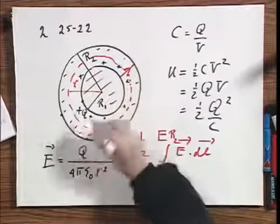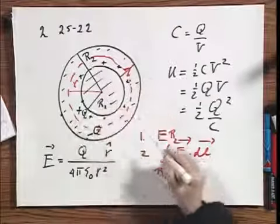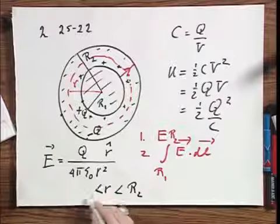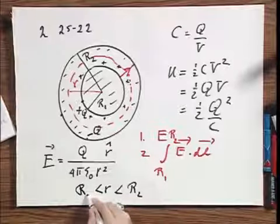vectorially E equals capital Q divided by 4π epsilon 0 R squared times R roof, pointing radially outward because the inner sphere is positive. And this holds only as long as R is smaller than R2 and larger than R1.